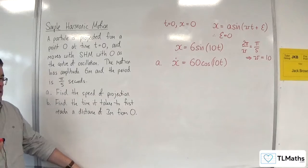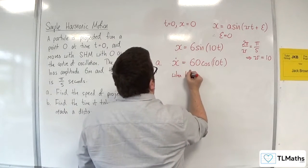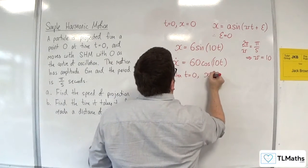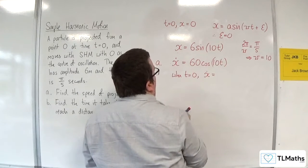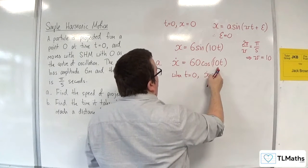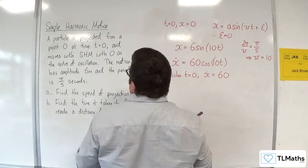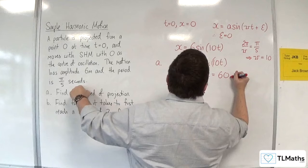Now when t is 0, x dot would be equal to 60 times cosine of 0. Cosine of 0 is 1, so we would have 60, and the units would be metres per second.